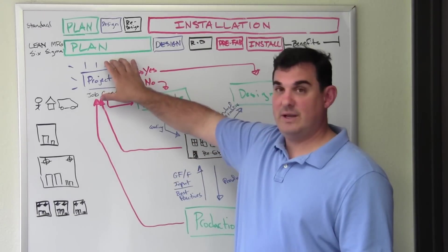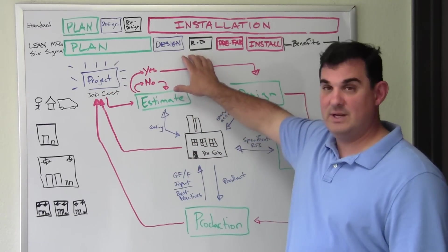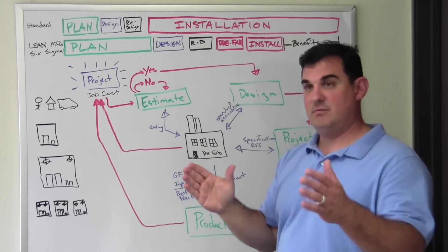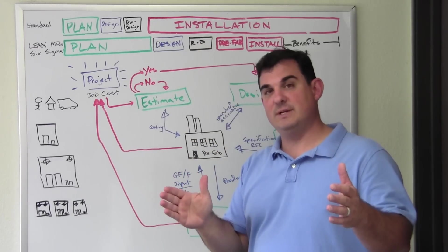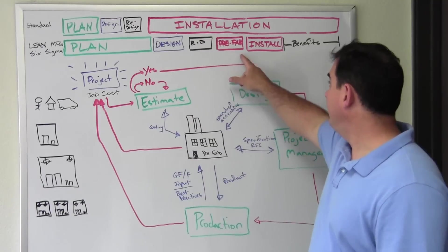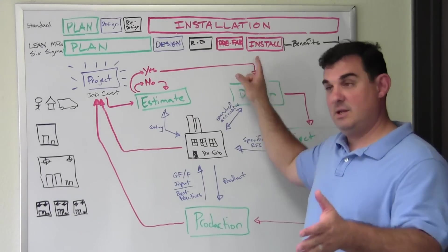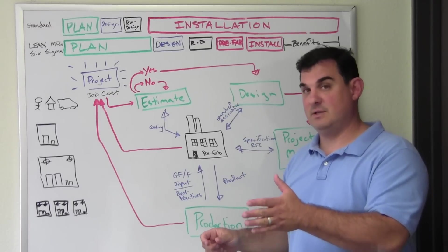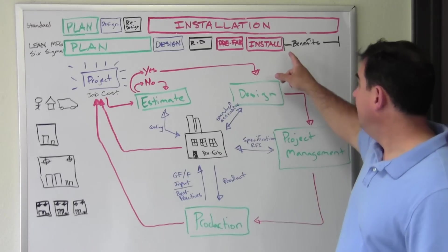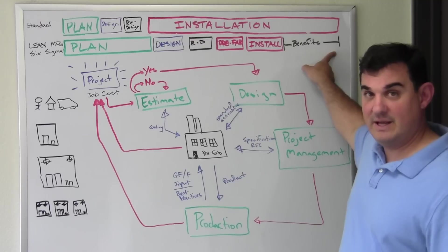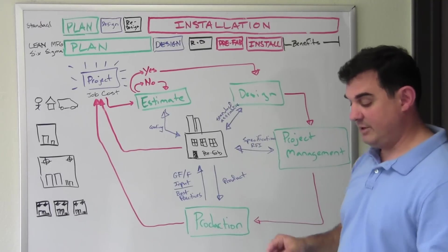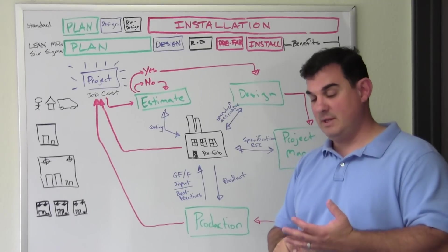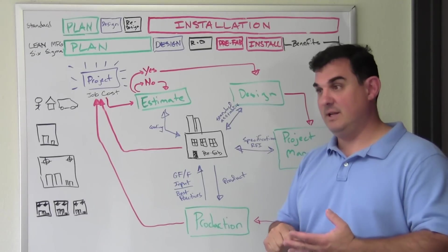you basically create planning, design, and redesign at 35 to 50 percent of the job time and then prefab and installation anywhere from 30 to 45 percent of the job time. In it, you should see benefits at the end of the project. Benefits in increased production time, benefits in increased profitability.